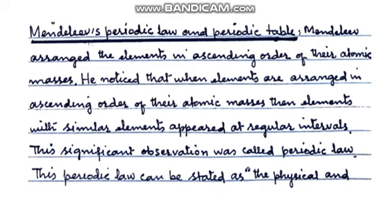Mendeleev's Periodic Law kya hai? Physical and chemical properties of elements are a periodic function of their atomic masses. Mendeleev ne notice kiya ki when elements are arranged in ascending order of their atomic masses, then elements with similar properties appeared at regular intervals — yaani periods khaas involve ho jaate hain.